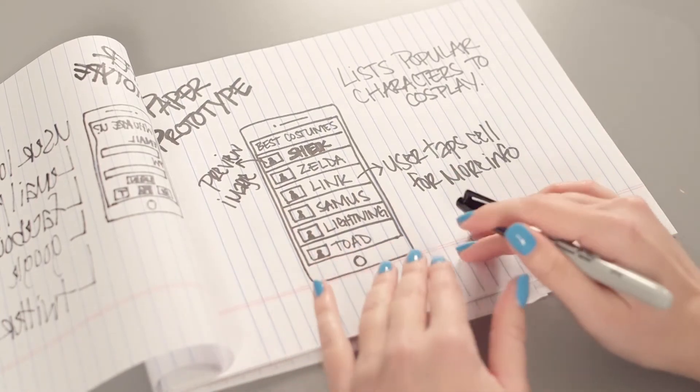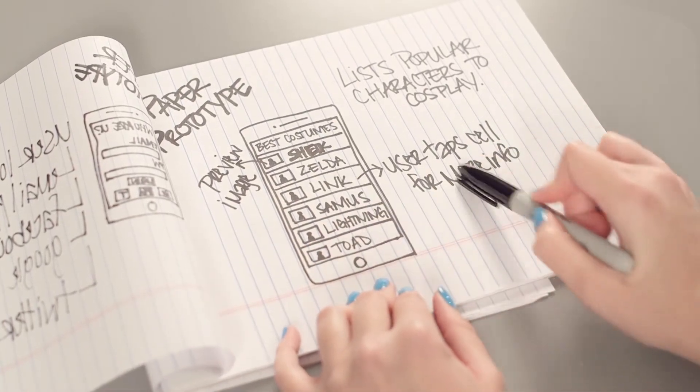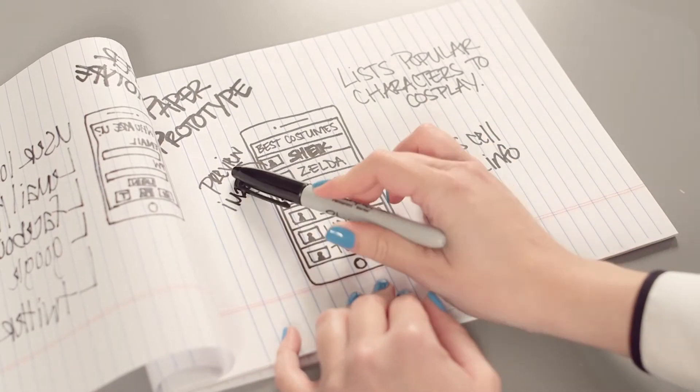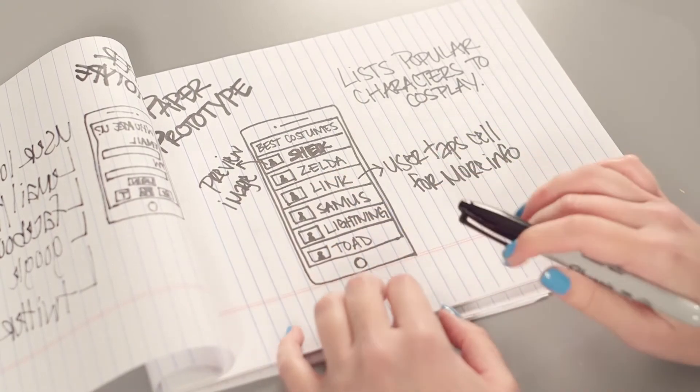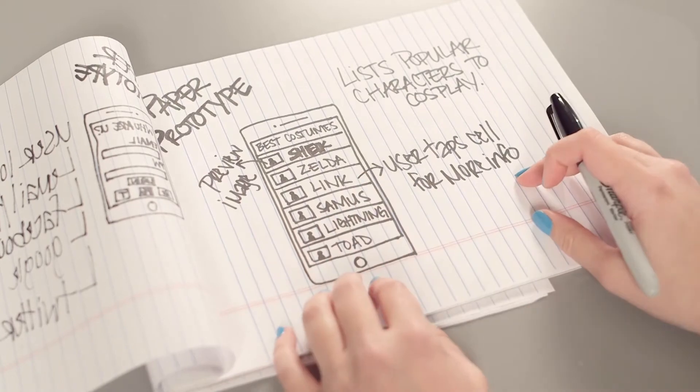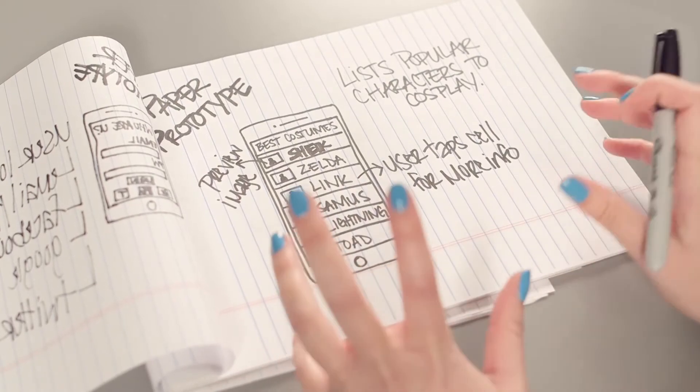Now, you want to be as detailed as you can here. I mean, what happens when a button is pressed? And where are you going to be pulling information from? The more information that you can include here in this paper prototype will help you down the road later.